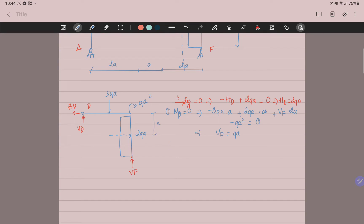You sum the forces in the S direction. You have VD minus 2QA plus VF equals zero, and you can have VD equals 2QA.